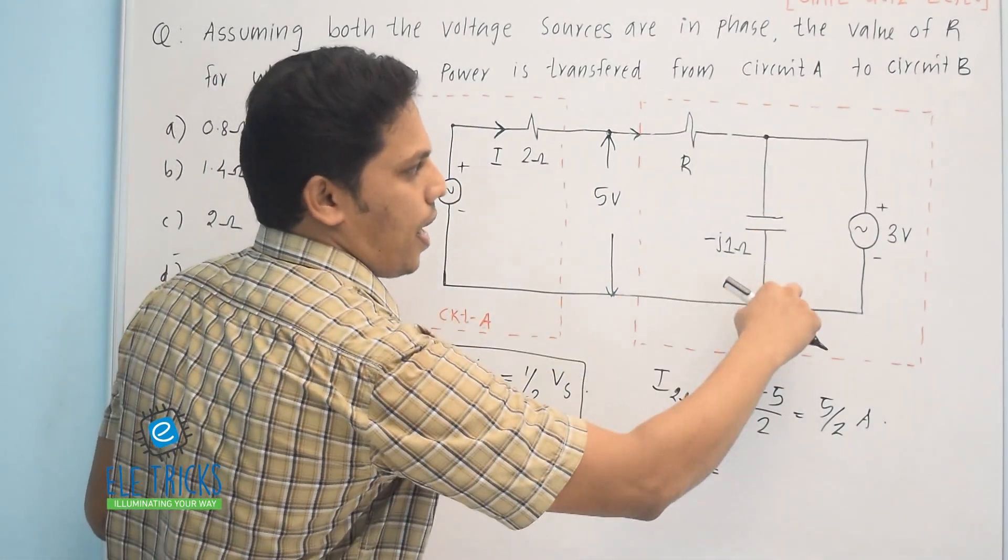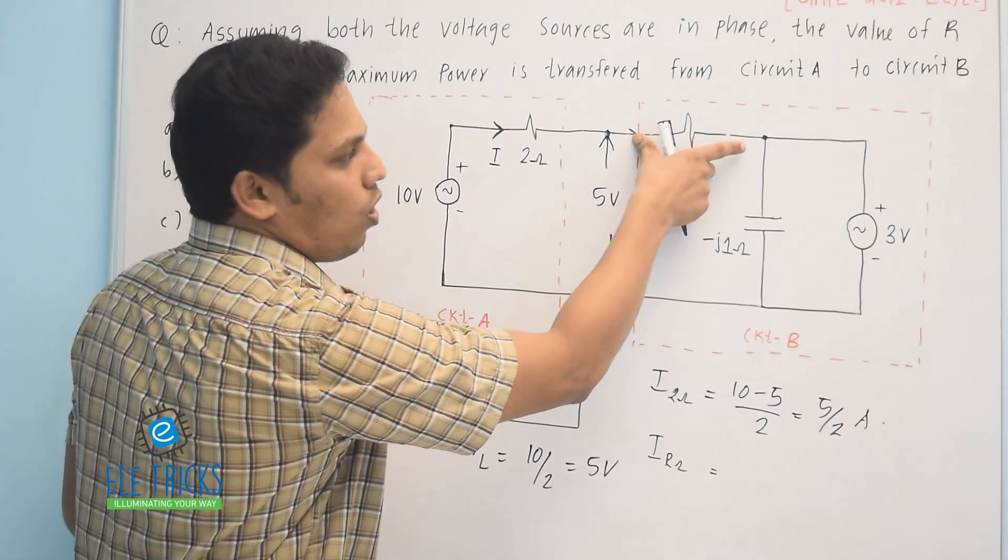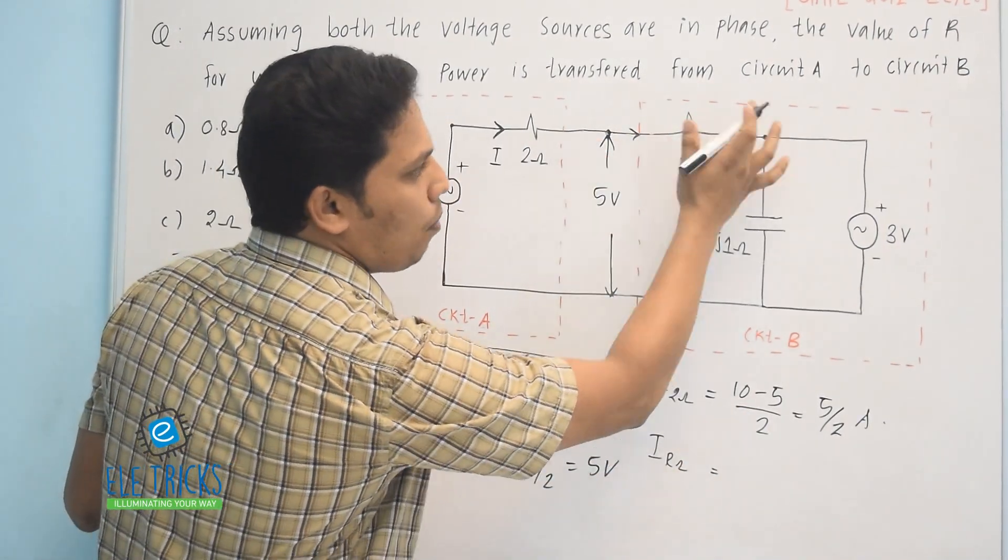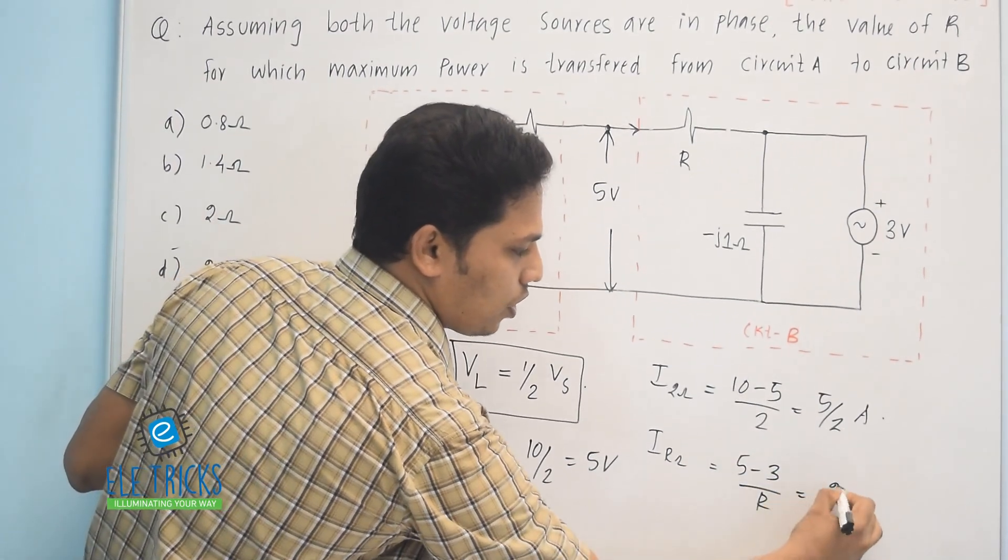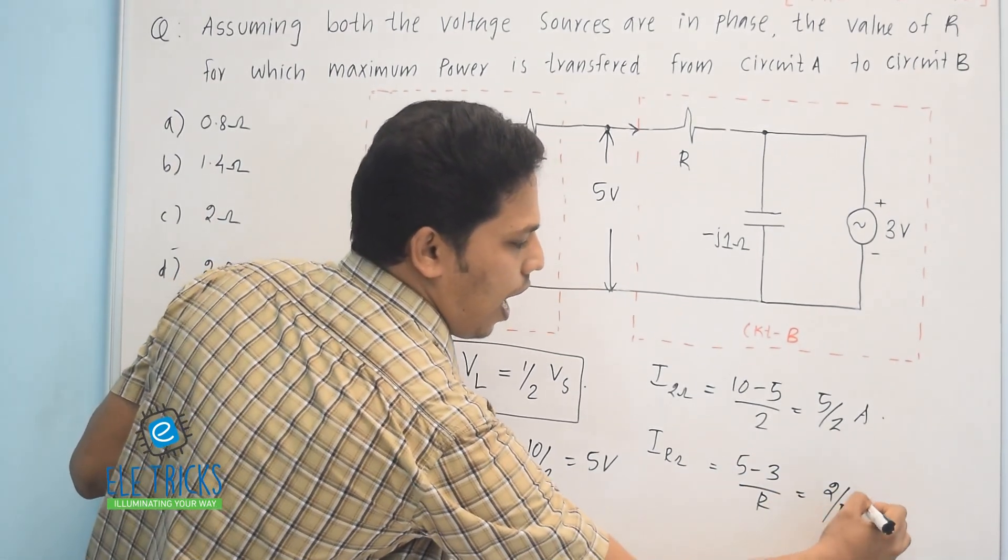Because these 3 volt and the capacitors are connected in parallel, the voltage across the capacitance is 3. So the voltage across the resistance is 5 minus 3 divided by R, that is equal to 2 divided by R ampere.